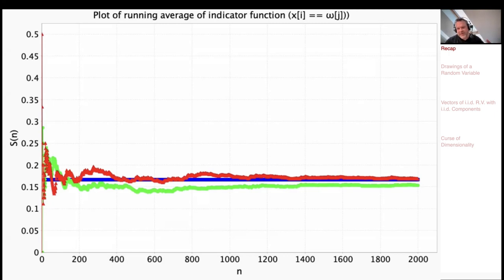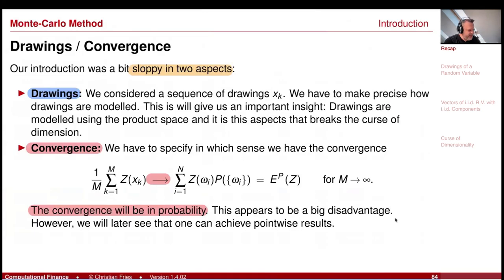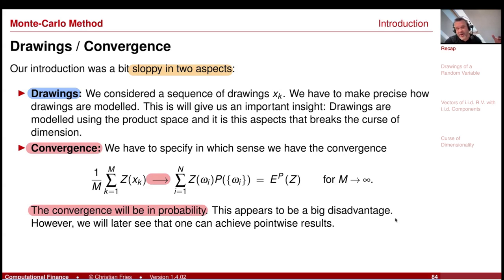Since in the computer we stop at a certain point, it's completely unclear how good we are. I will comment on this defect from time to time. But rest assured that later, when we talk about low discrepancy sequences, we can actually fix this and get a pointwise result. So it's not such a bad idea to just move on. The Monte Carlo method also works very well if you just use it with a pseudo-random number sequence, though that result only holds in probability.